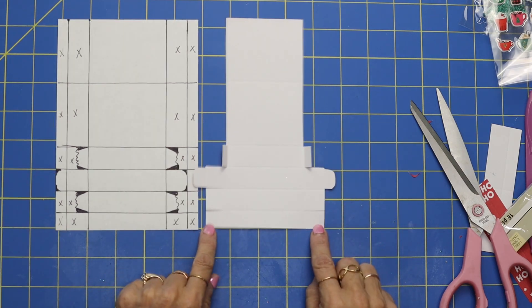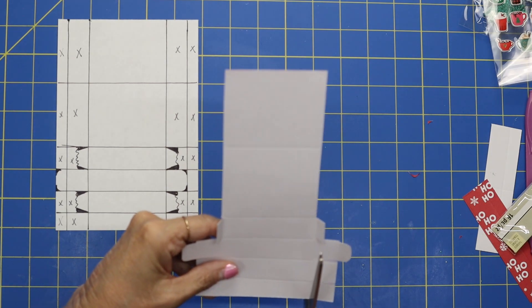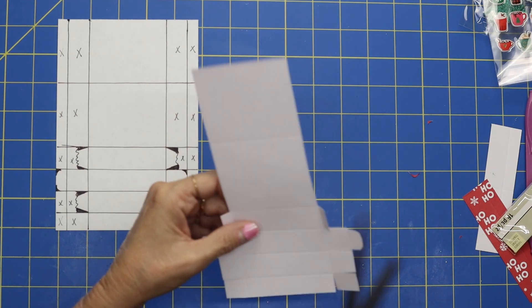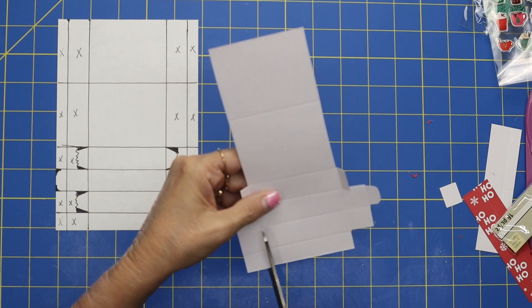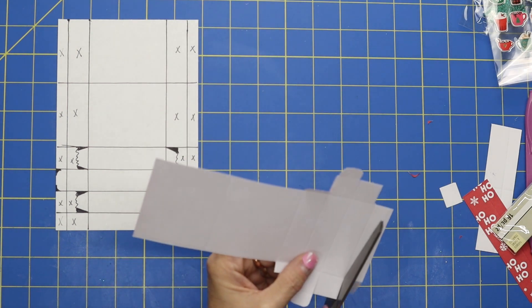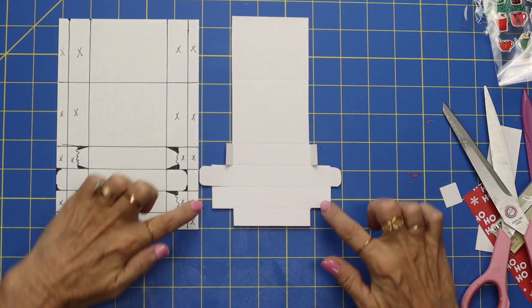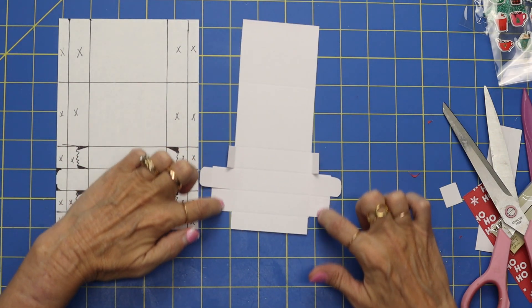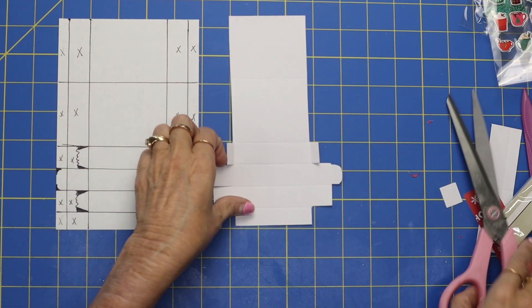Now we're going to cut out these very bottom squares. Once again I could have done it all together, but I'm trying to not lose you in the process. So this is what we're looking like. Now this little one we're just going to cut a little section off like we did up here at the top. Just about half.